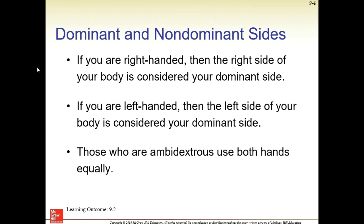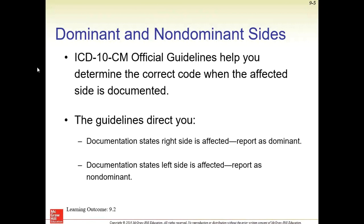So if you're right-handed, the right side of your body is considered your dominant. If you're left-handed, the left side is dominant, and those who use both hands equally are ambidextrous. If it's not documented, we're going to assume if it's the right side, it's the dominant side. Guidelines direct you: if documentation states right side is affected, report as dominant; if the left side is affected, report as non-dominant. This is if it's not specified — of course, you'd be better off to ask your physician to clarify.